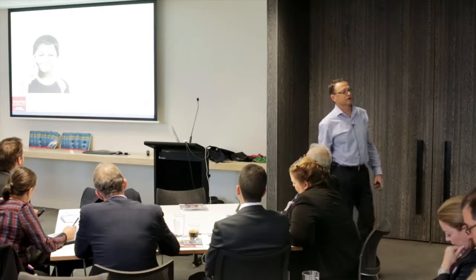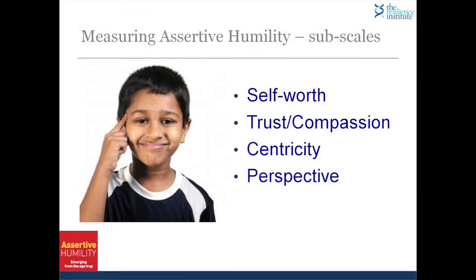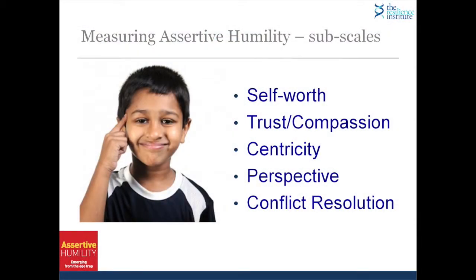The fourth sub-scale I adopted is that of perspective, because a lot of our assertive humility is destroyed when we forget what this thing is all about. Has anybody worked out that life is a bit of a ride — we have fun and we make a contribution? The fifth and last sub-scale is how do I choose to resolve conflict? This is more on the assertiveness scale. Do I do this aggressively, passively and avoiding, or with strength? There's an overlap here around the compassion piece.